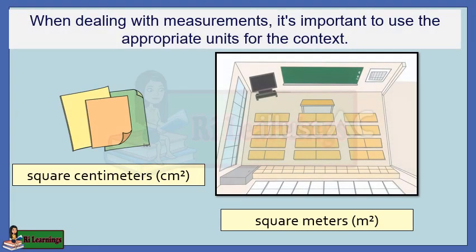When dealing with measurements, it's important to use the appropriate units for the context. Paper, being relatively small, is often measured in square centimeters because it's convenient for such small areas. On the other hand, larger spaces like classrooms are measured in square meters due to their size.